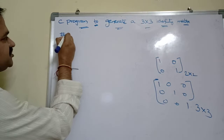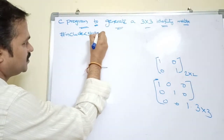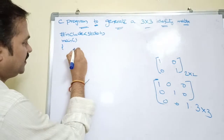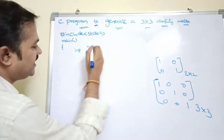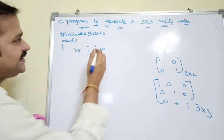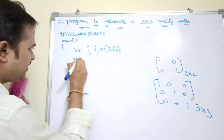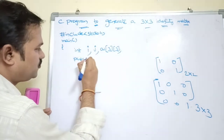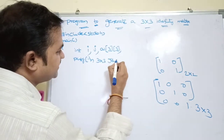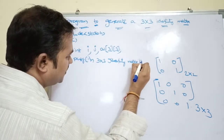Let's see the program. We have #include stdio.h. Execution starts from the main function. Here to perform operations on rows we use i, and for columns we use j. Let's assume the name of the matrix is 'a', with row size 3 and column size 3. There is no need for any input. We directly display the output: printf("3 by 3 Identity matrix is:\n") so the cursor moves to a new line.